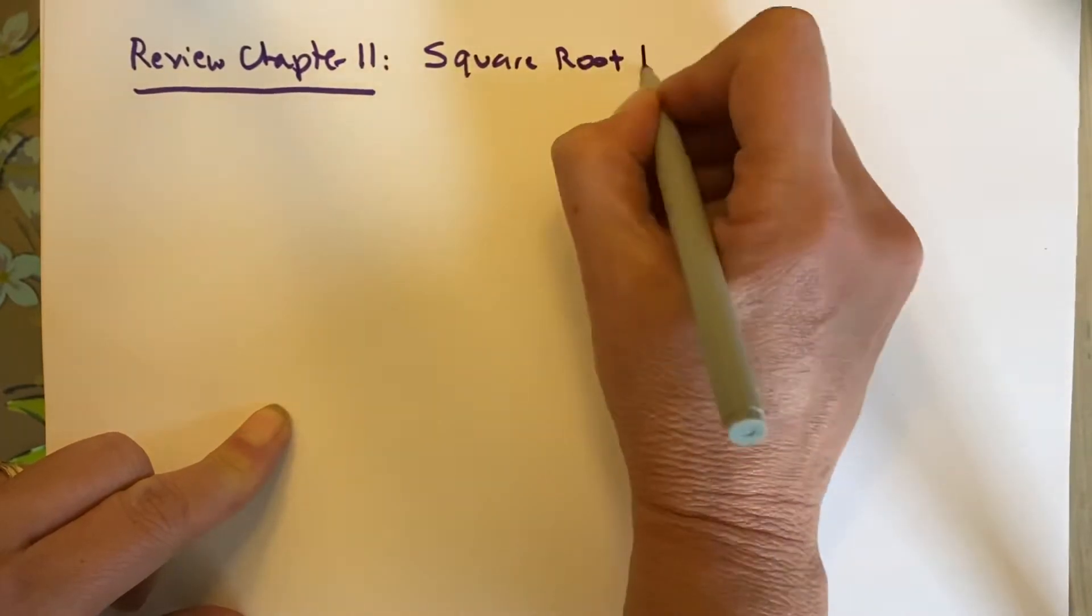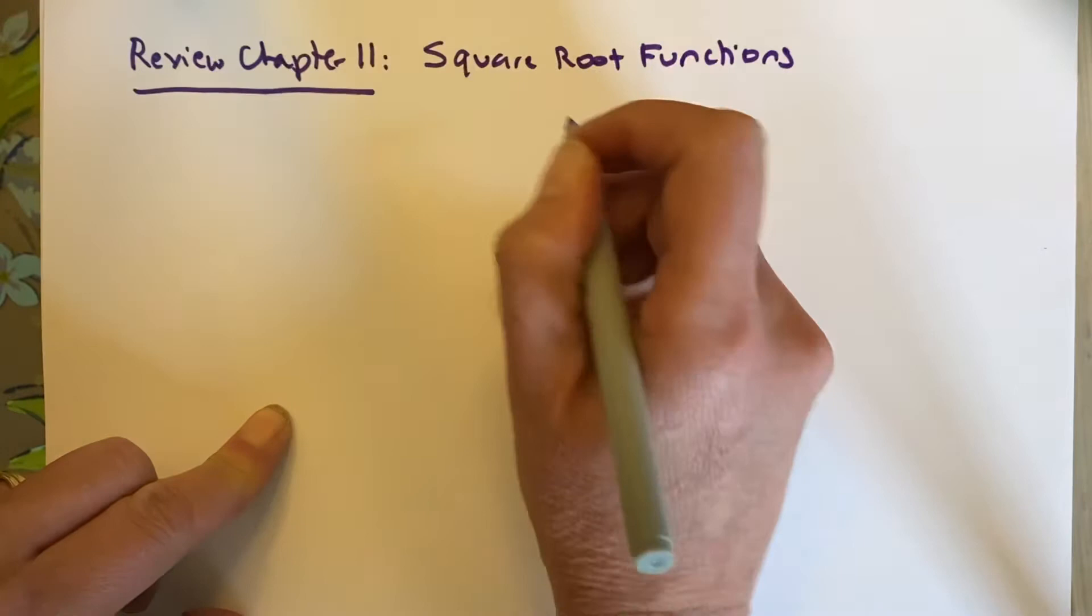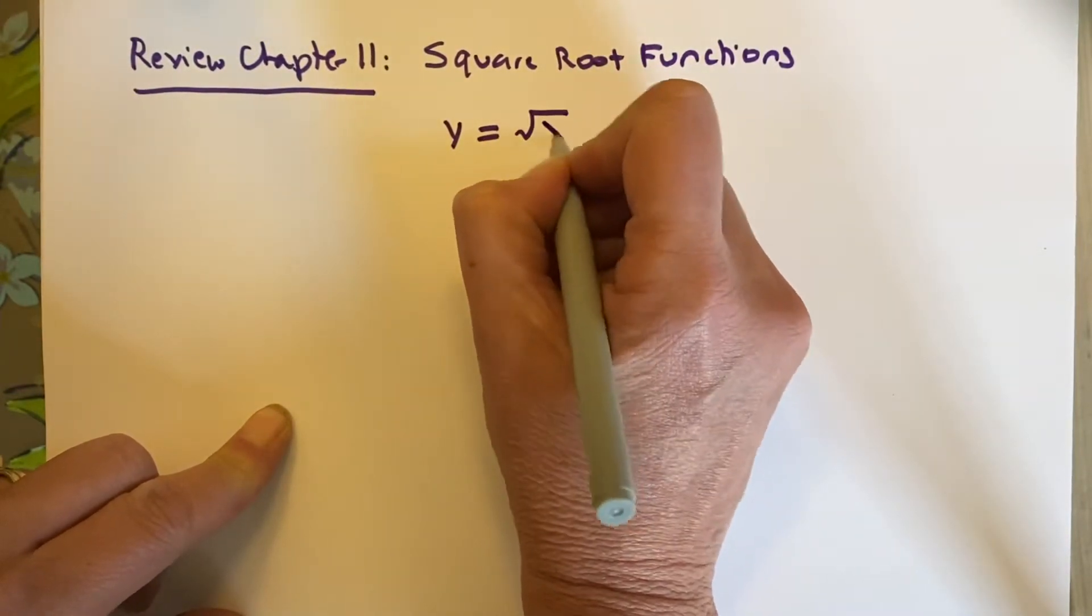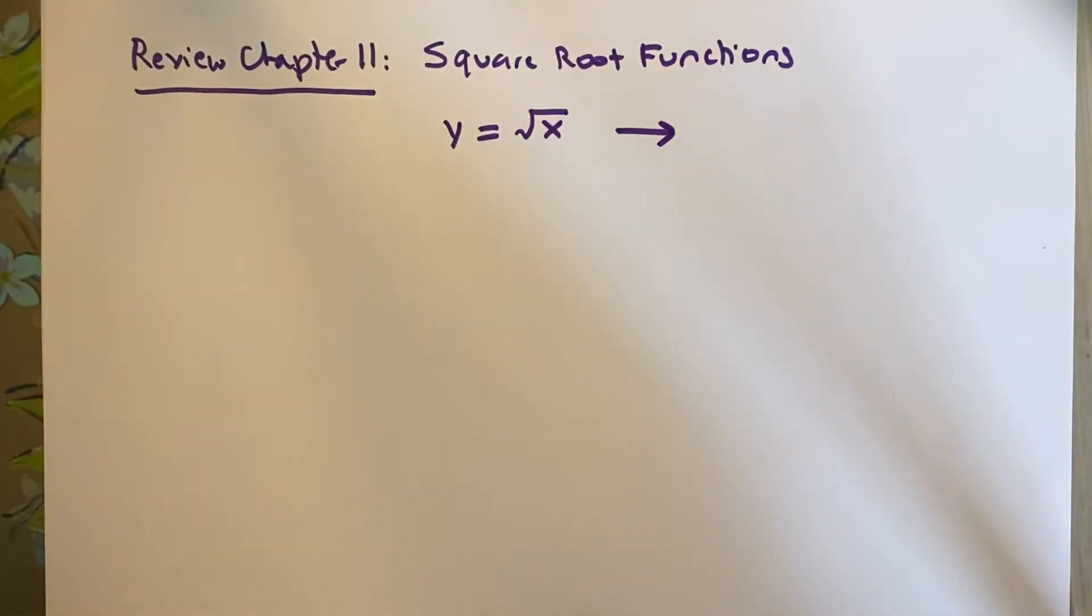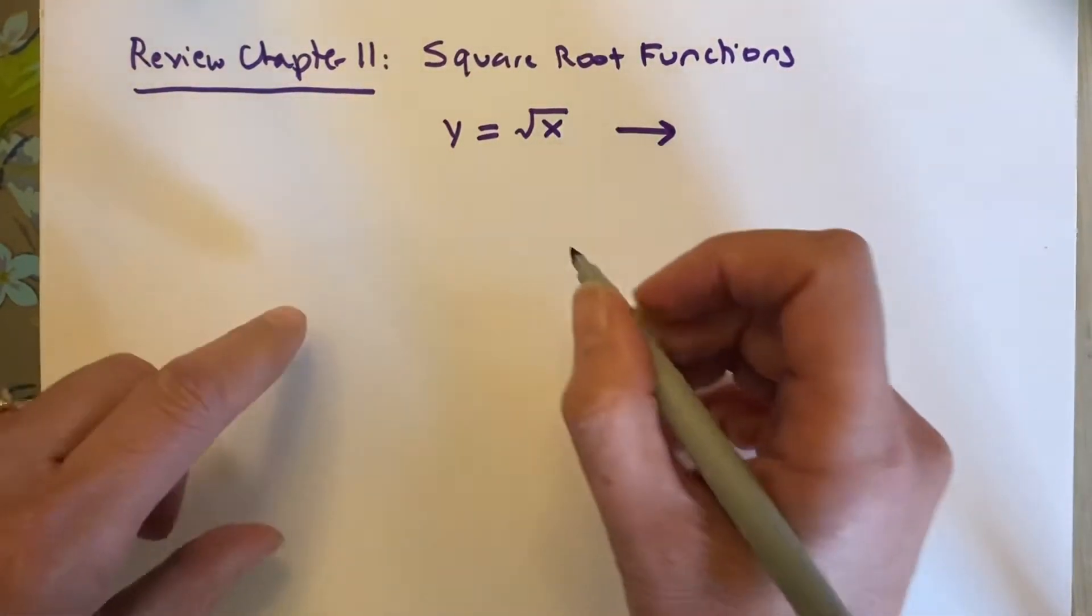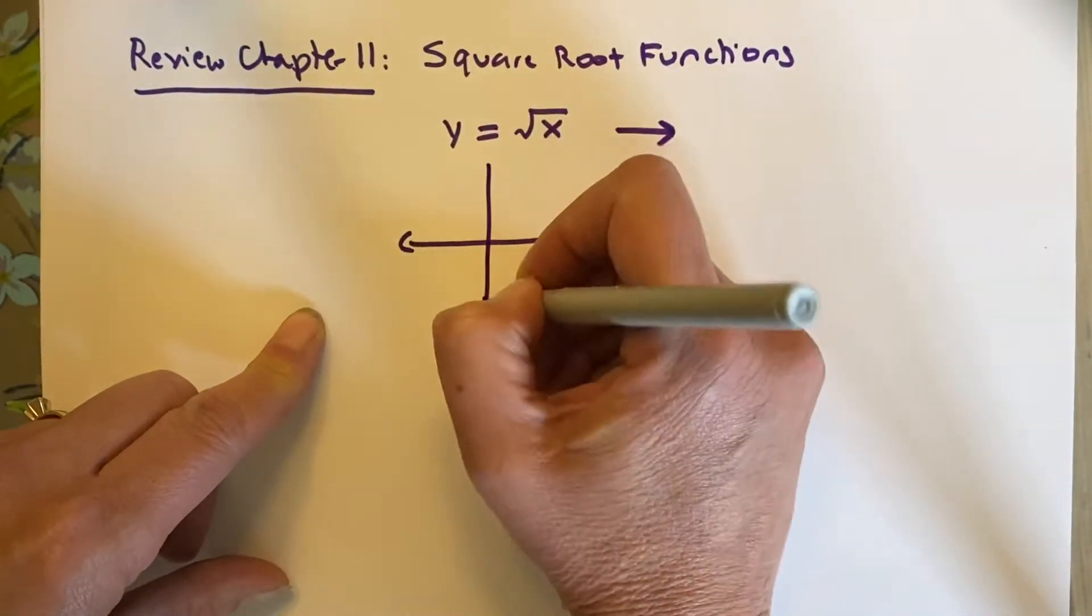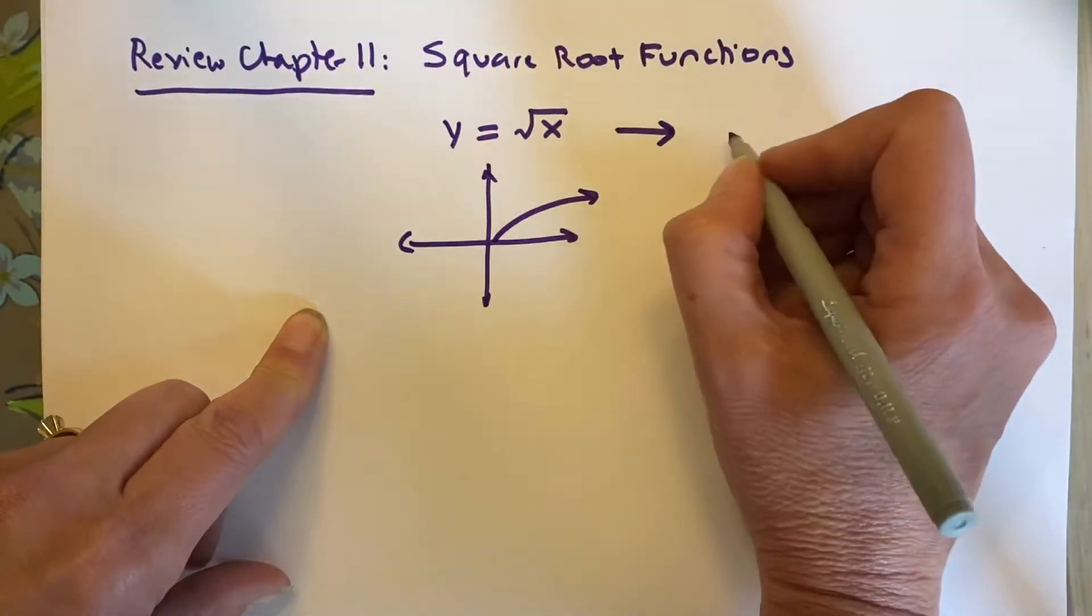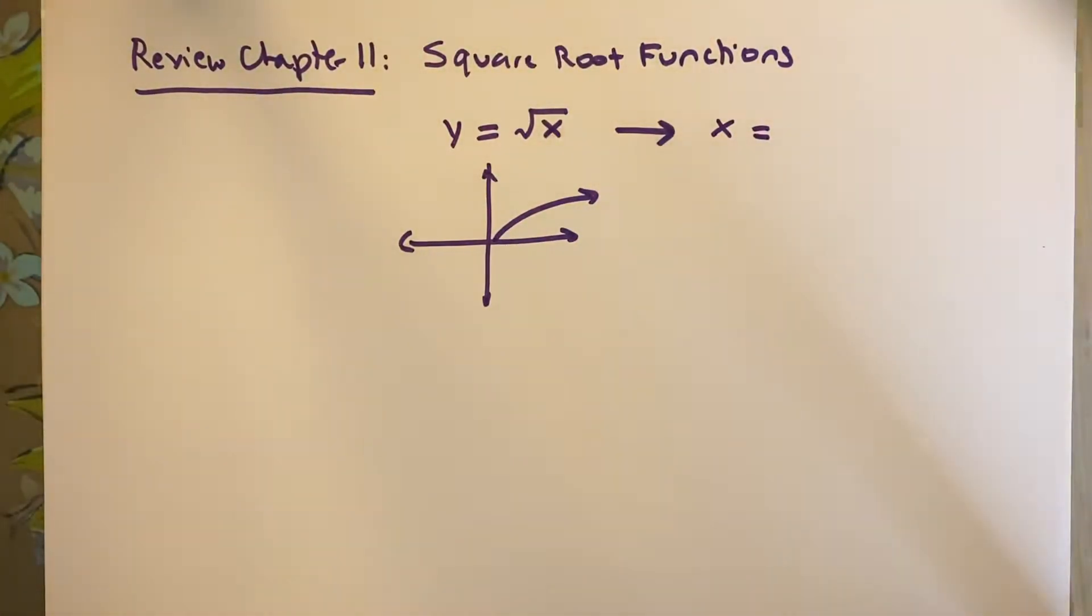First, you need to know the basic format. The parent function is y equals square root of x. That's the function if you just do a very simple graph right here, starting at 0, with no changes. But the full function, if you include all of the different possibilities...